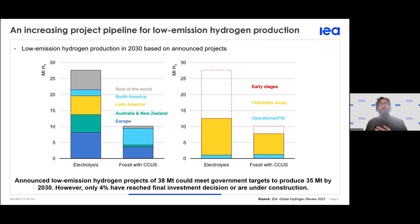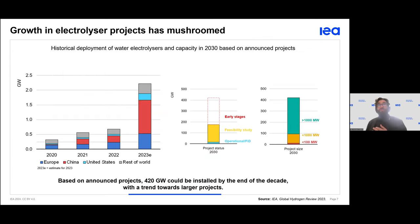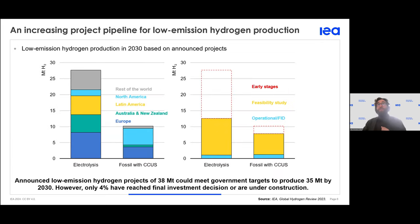These distinctions should be clearly made. Currently, most production comes from electrolysis. Production from fossil fuel sources and CCS-based production is still relatively limited. On the right-hand side charts, we can see the current project status as of 2023.